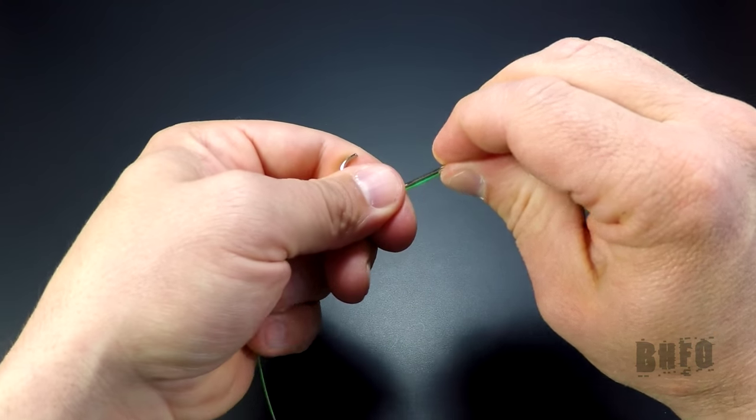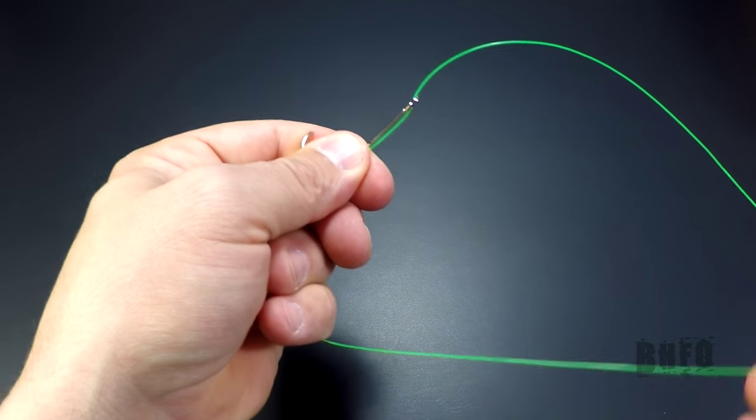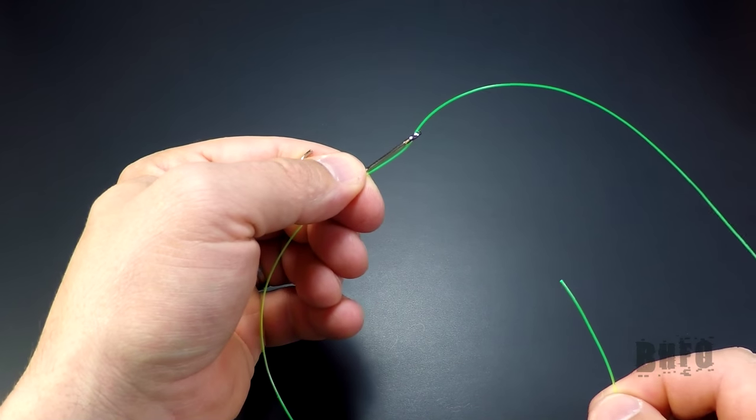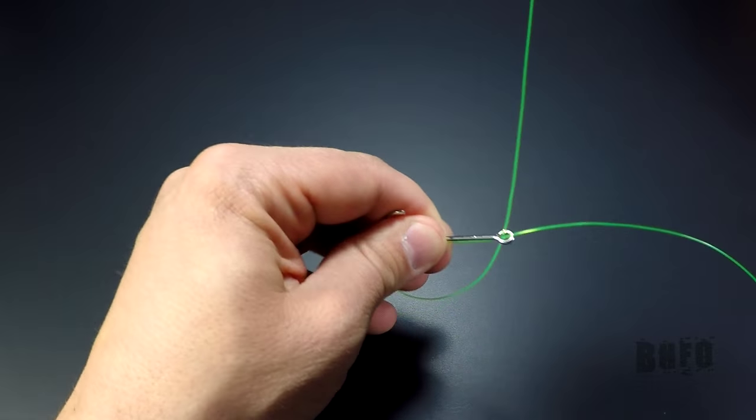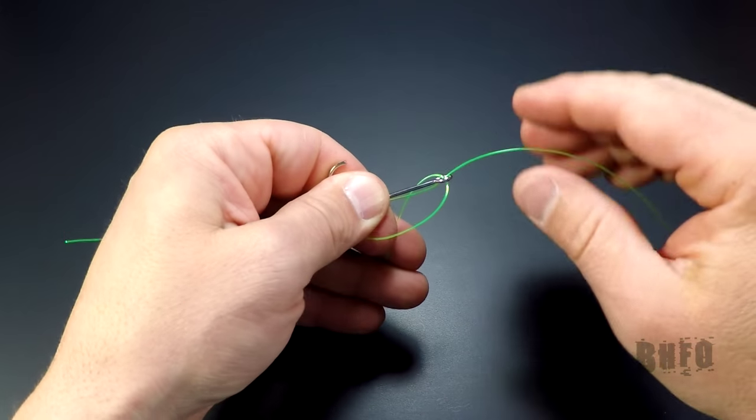Pinch the line to the shank close to the bend. Now take the tag and go back up through the hook eye, pulling out an 8 to 10 inch tag.